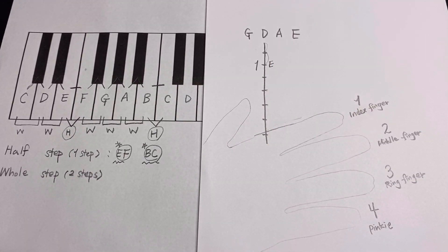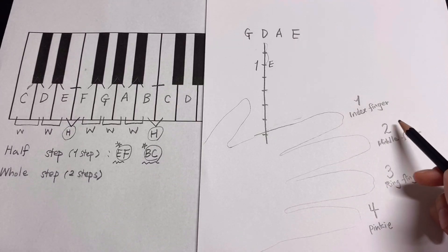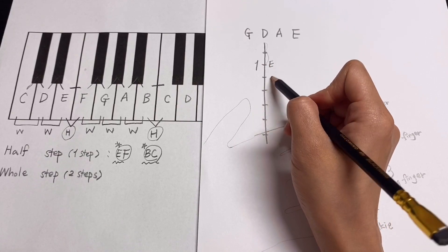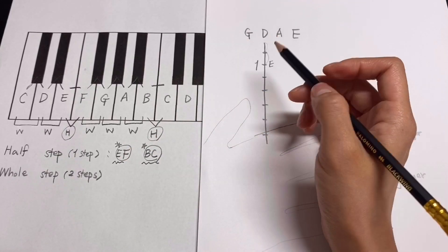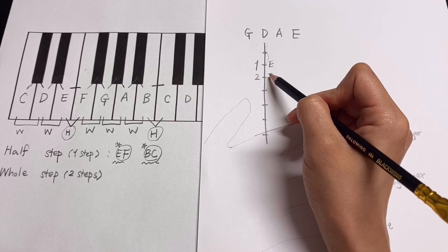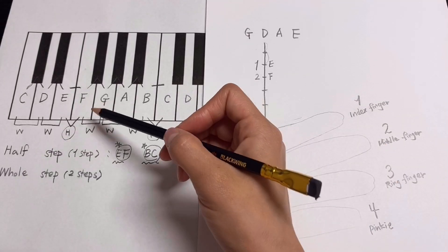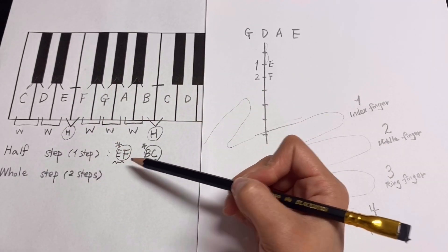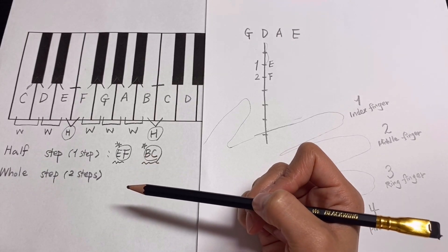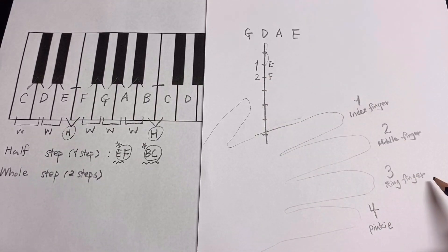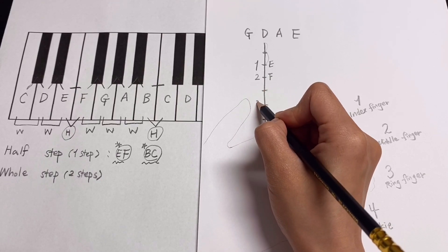Next note will be F. D, E, F — you play F with the second finger. E and F is half step, so only one step; you drop the second finger right next to the first finger. And next will be G. F and G is whole step, not a half step, so that is two steps — one, two. You drop your third finger, your ring finger, farther to play G.